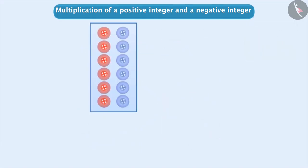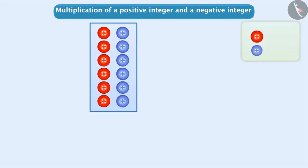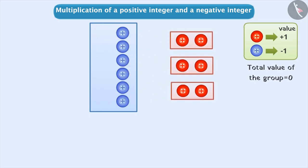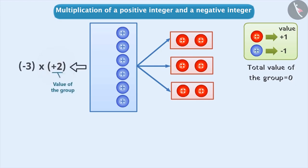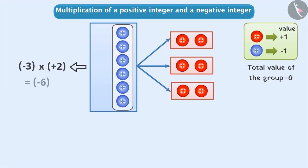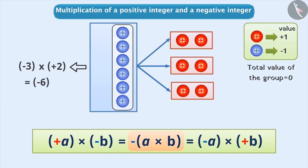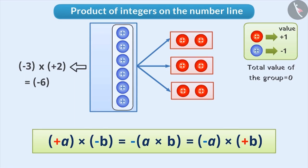Here is a group of red and blue buttons and there are six such groups. Since the values of red and blue buttons are opposite, the total value of the group will be zero. Now, if we take out a group of two red buttons and three such groups, since we are making a group of two red buttons the second number will be positive 2, and since we are taking out three such groups the first number will be minus 3. After taking them out, six blue buttons will remain — that is, minus 3 into plus 2 will be equal to minus 6. Therefore, we can say that the multiplication of one positive and one negative integer is always negative. The product of two integers with different signs is always negative. To find the product, we multiply the integers ignoring the signs and prefix the result with a minus sign.